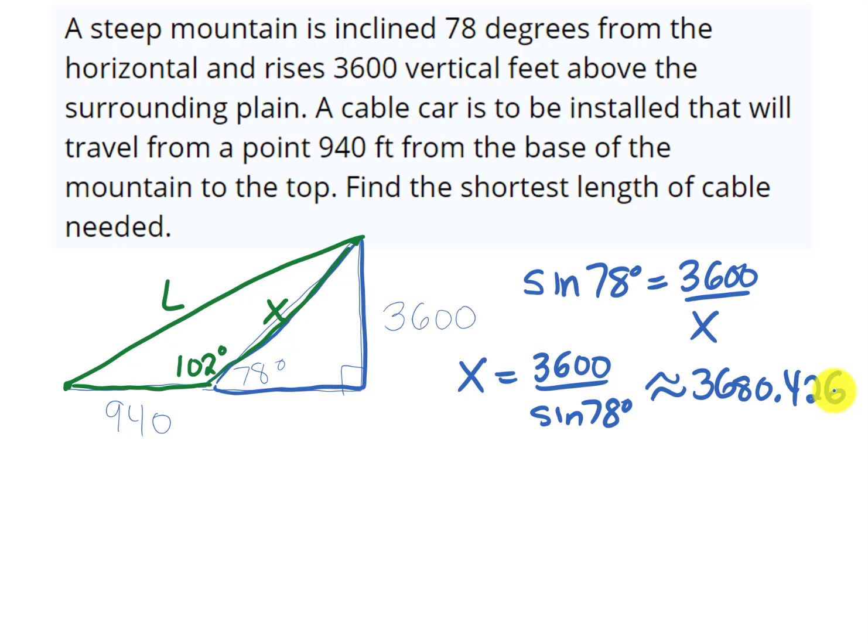Now I can go back to this green triangle and I can use the law of cosines to find L. The law of cosines says L squared equals the sum of the squares of the other two sides which is 940 squared plus X squared.